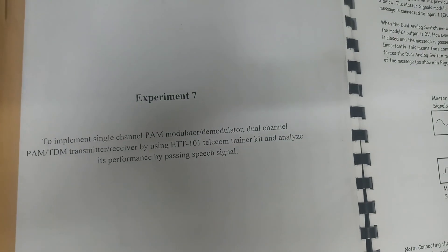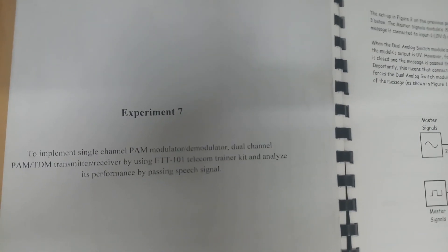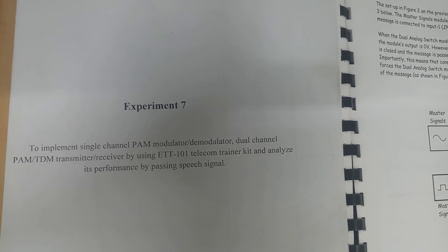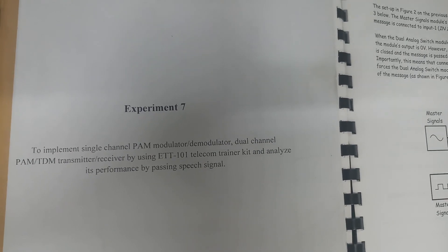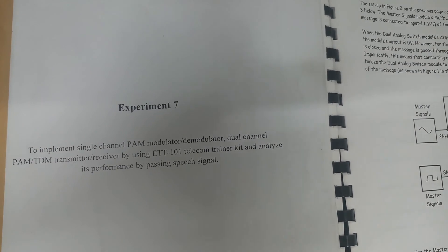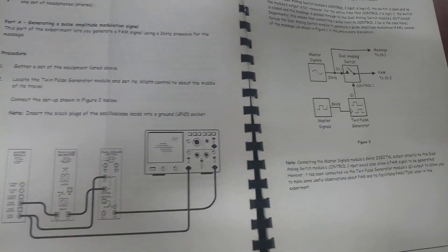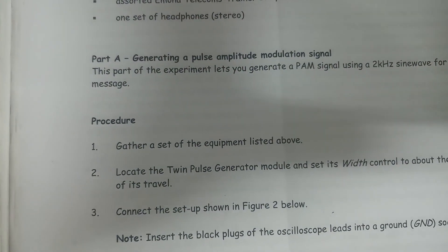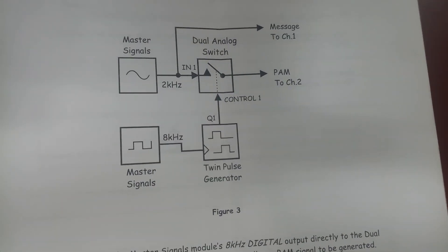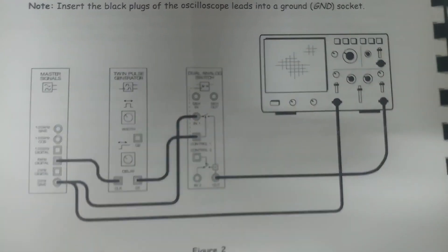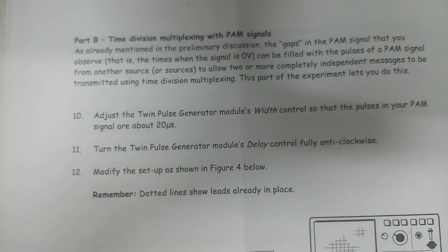So, the next experiment is to implement single channel PAM modulator and demodulator, dual channel PAM or TDM transmitter and receiver by using the Amuna Telecom Trainer kit, and analyze its performance by passing speech signals, sinusoidal signals, and PAM signals. There are three parts. The first part is generating a set of pulse amplitude modulation signals. This is the block diagram and this is the connection diagram.